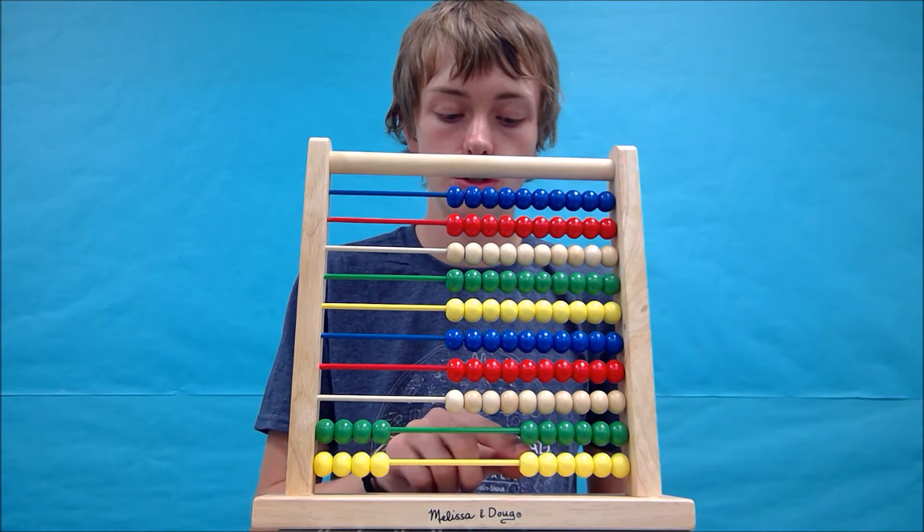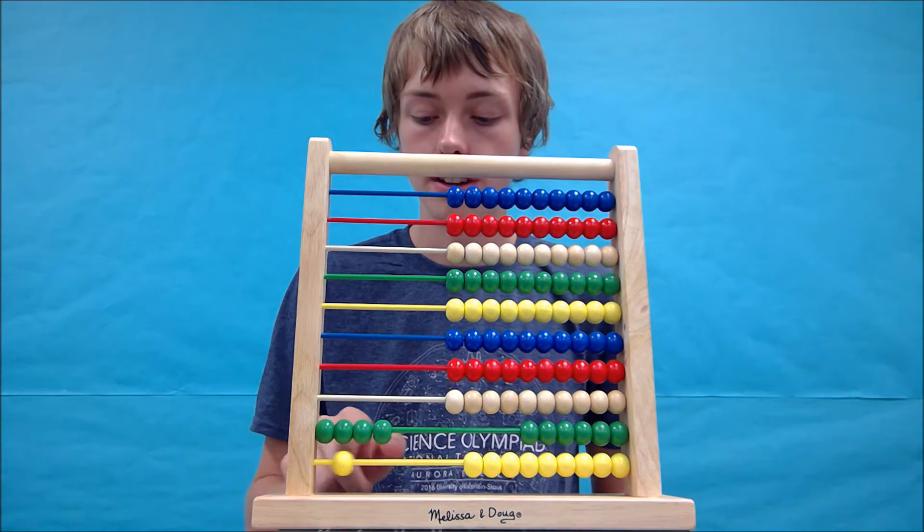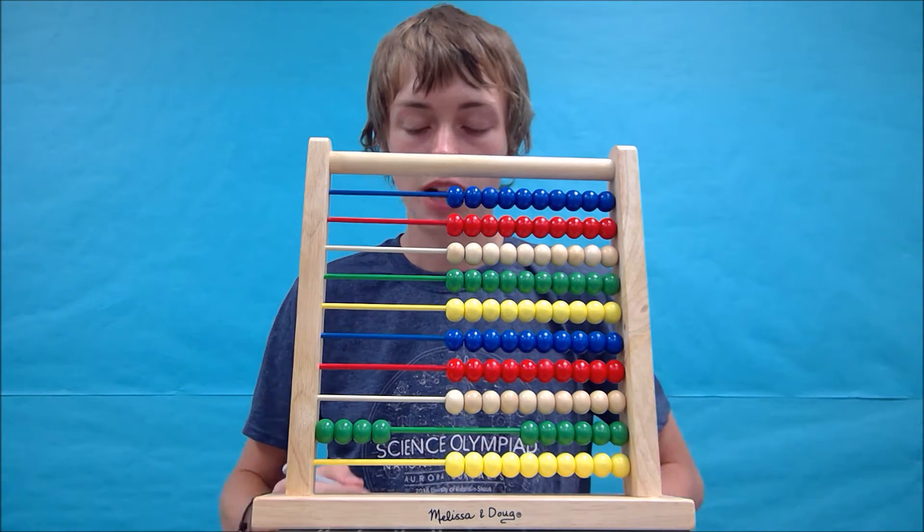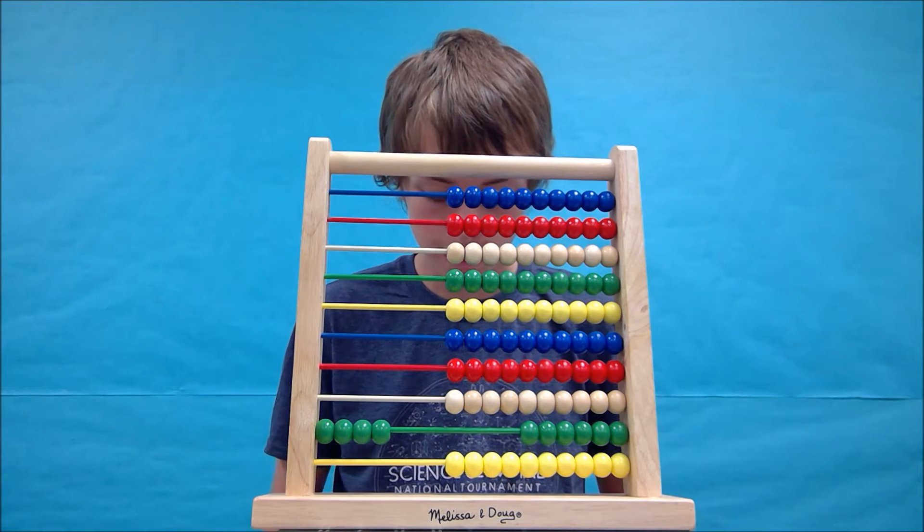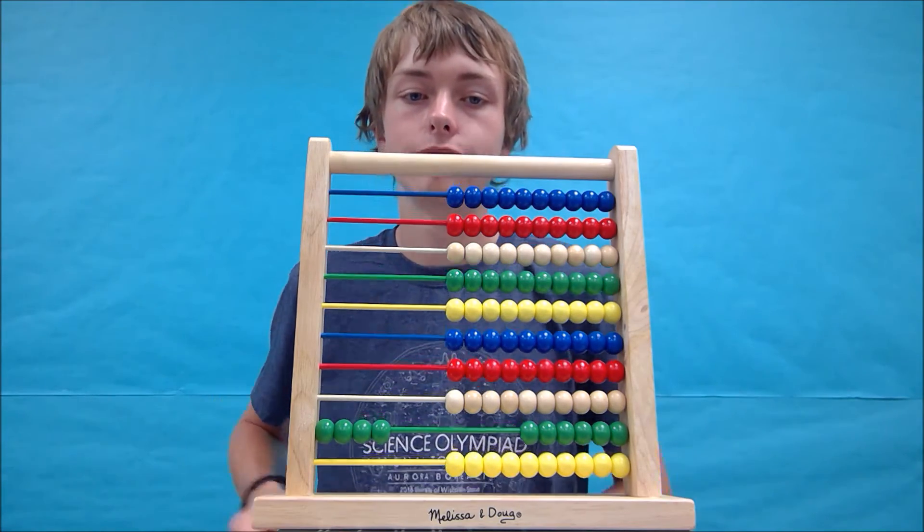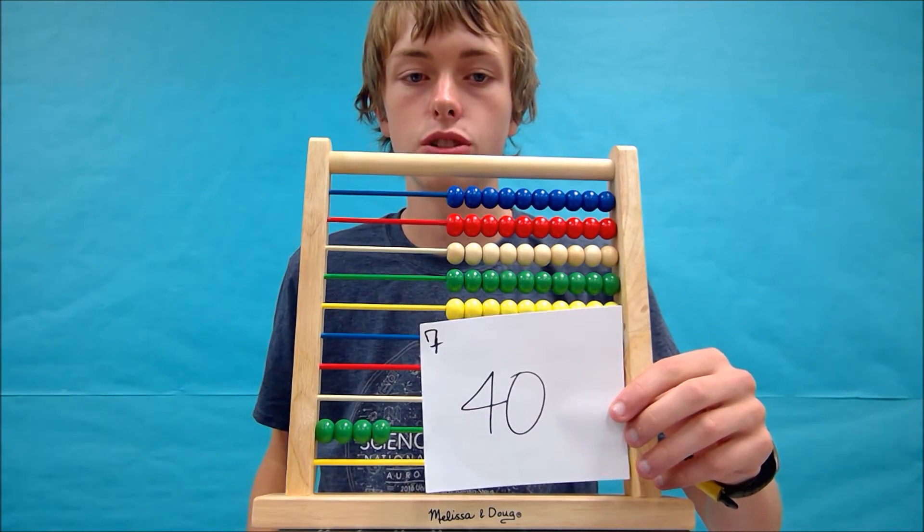So our answer is pretty simple here. I'm just going to write it down for concept, but you can easily tell the answer is 40. And I have my notes up here, and this is what the abacus should look like.